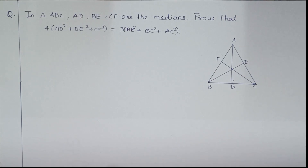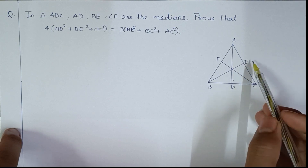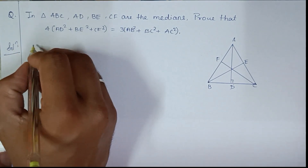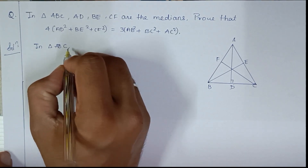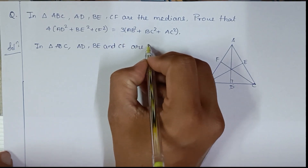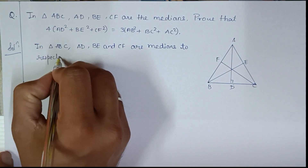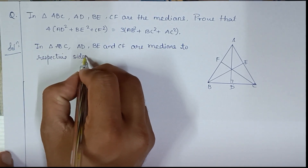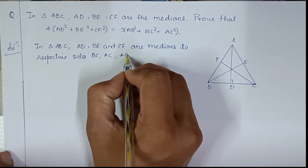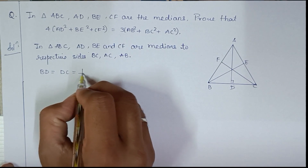First of all, we have to keep this in mind. In triangle ABC, AD, BE, and CF are medians to their respective sides. AD is the median to side BC. BE is the median to side AC. CF is the median to side AB. If we look at this figure, BD is equal to DC, and that is nothing but half of BC.